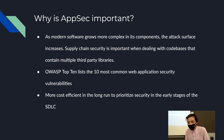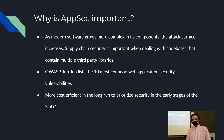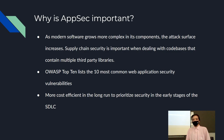Why is AppSec important? As modern software grows more complex, so does the attack surface. Supply chain security is important when dealing with code bases that contain multiple third-party libraries. The OWASP Top 10 lists the most common web application security vulnerabilities — there's also OWASP Top 10 for mobile security and API security. Ultimately, AppSec is important because it's more cost-efficient in the long run to prioritize security in the early stages of the software development life cycle.